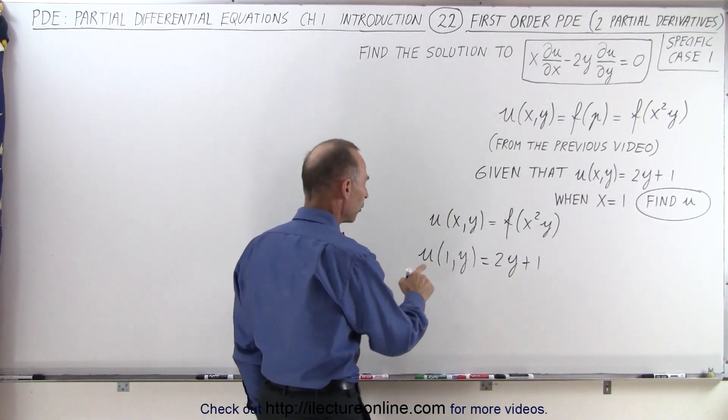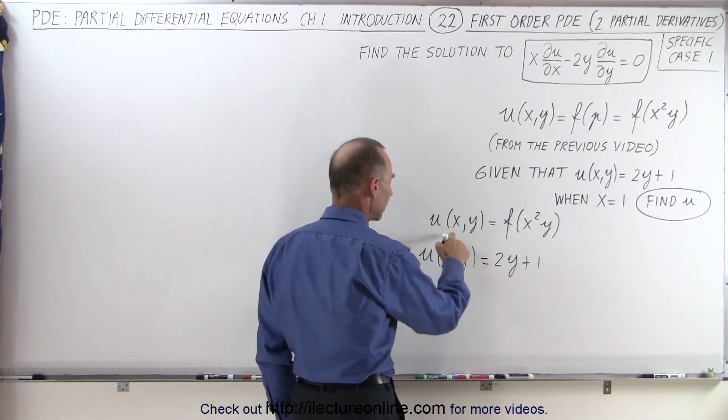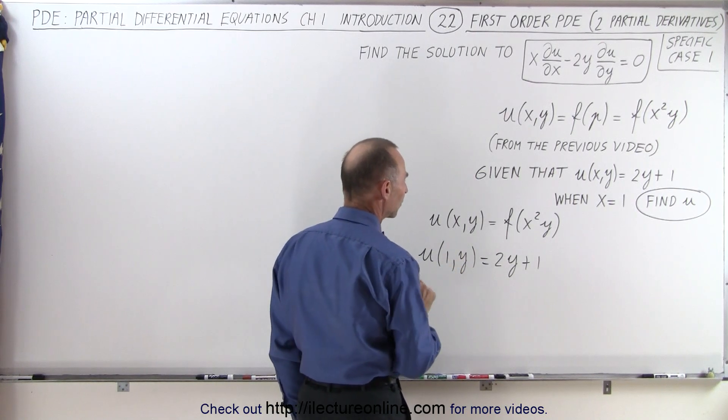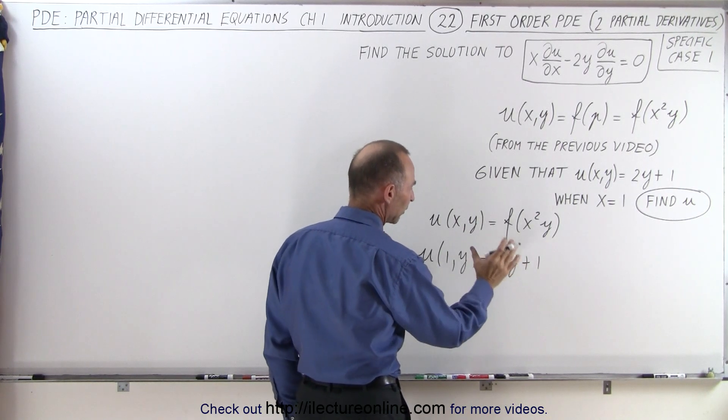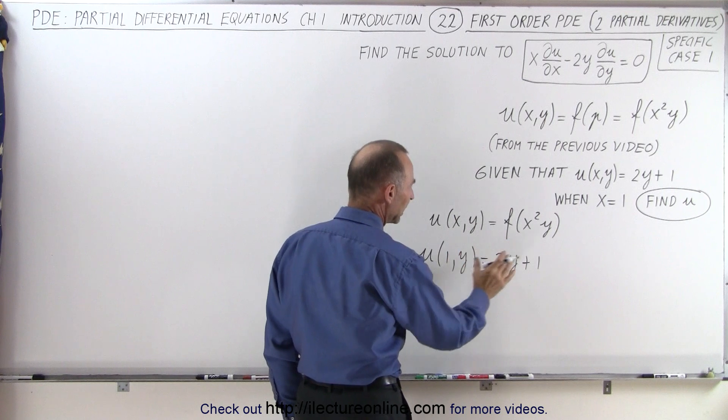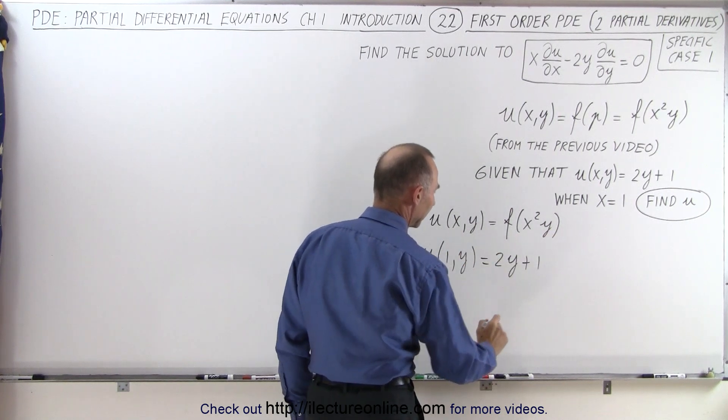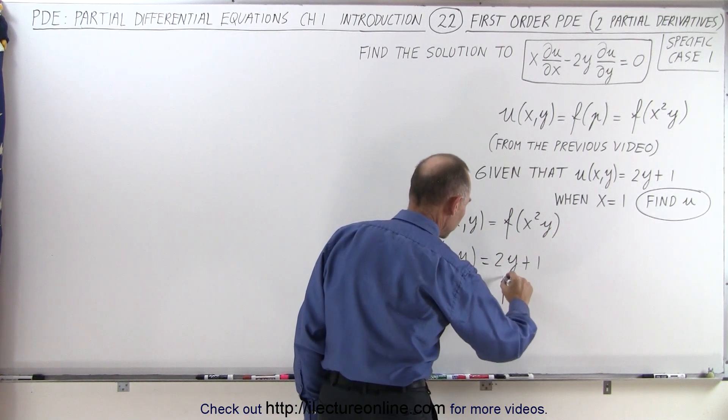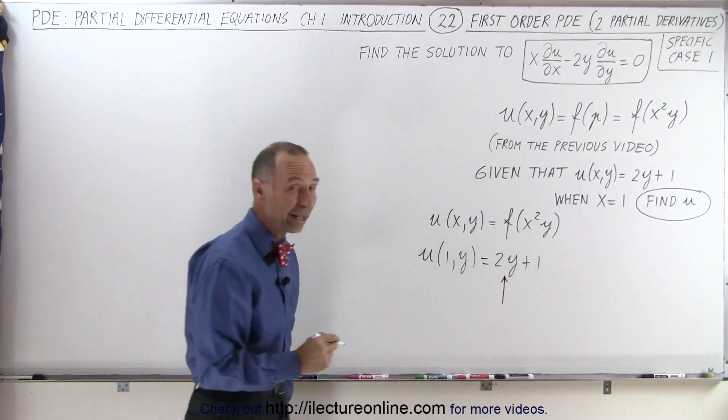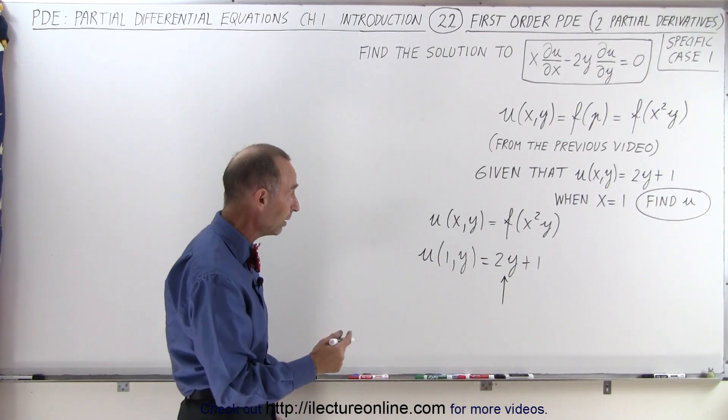So now how do we go from here to here if we replace 1 by x? We know that somewhere in our function, somewhere in our u, we need to have an x squared y and the place to insert that would be right here. So if we write 2x squared y plus 1...